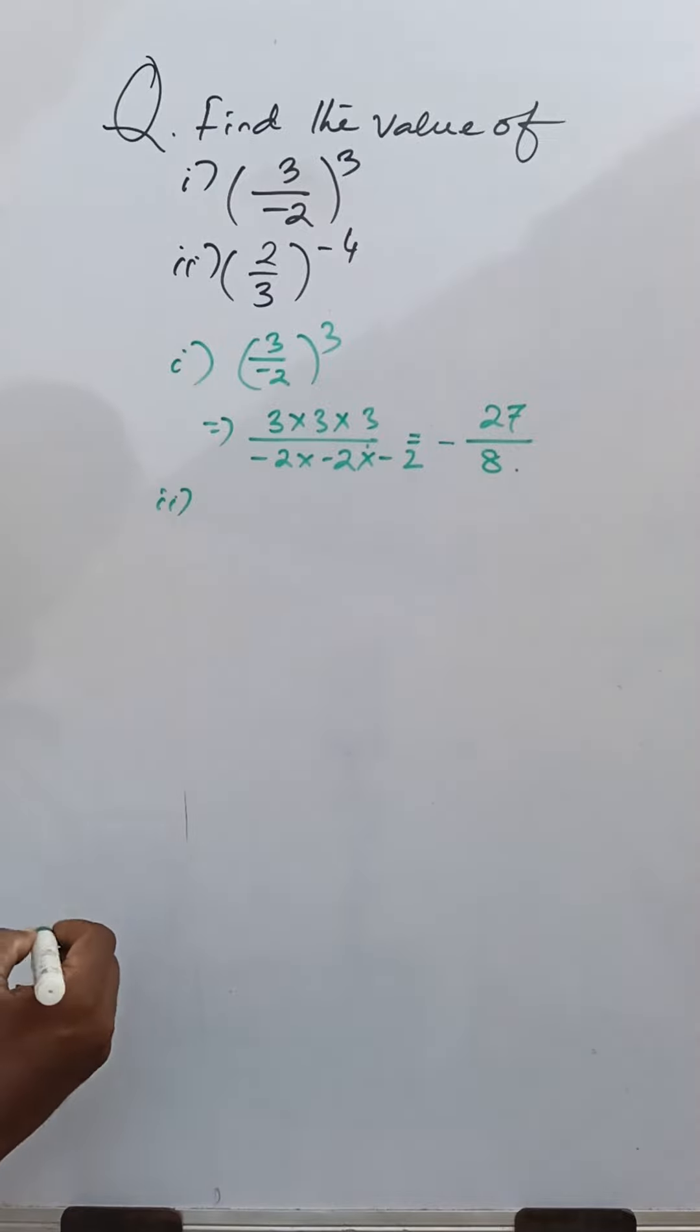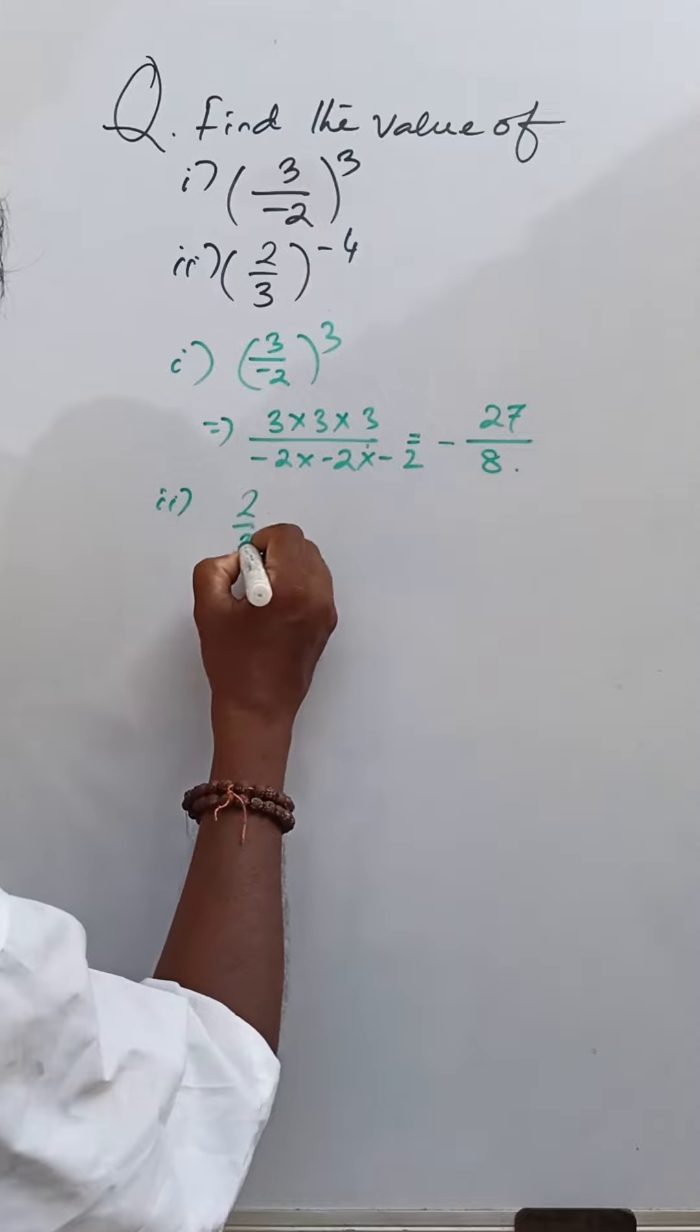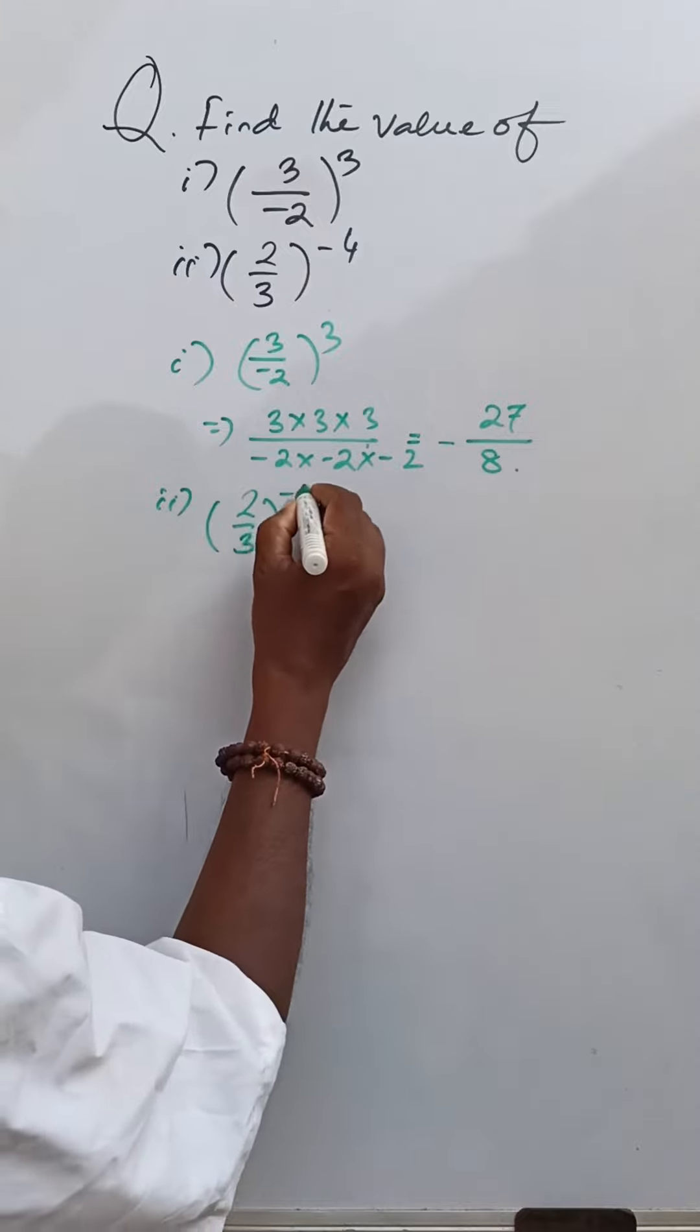Then from the second part, that is 2 by 3 whole to the power minus 4.